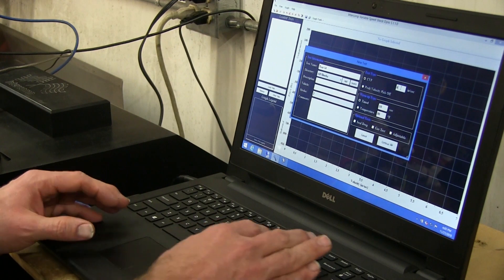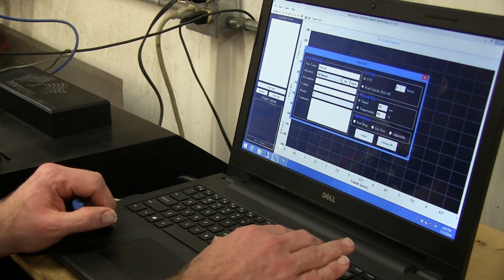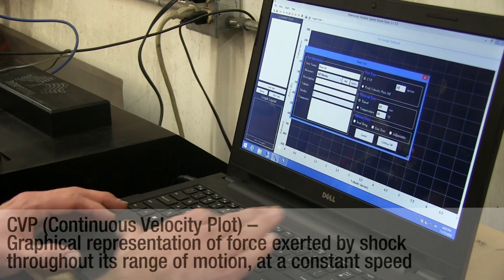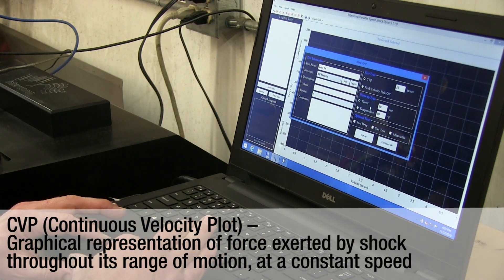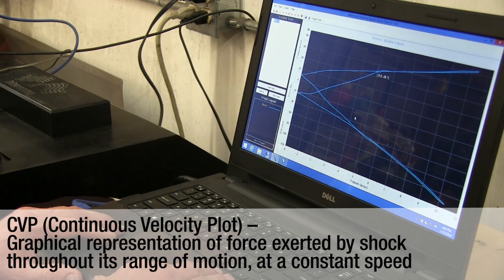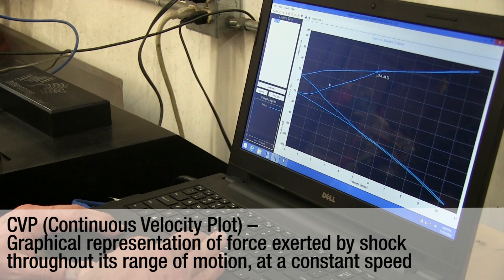Now I have a choice up here in your test types to pick either a CVP or a PVP. We're going to go through the CVP first. I'm going to put in 10 inches a second and I have a timed warm-up run of 10 seconds. And as you can see, this is going to lay out my data in a force versus absolute velocity test.